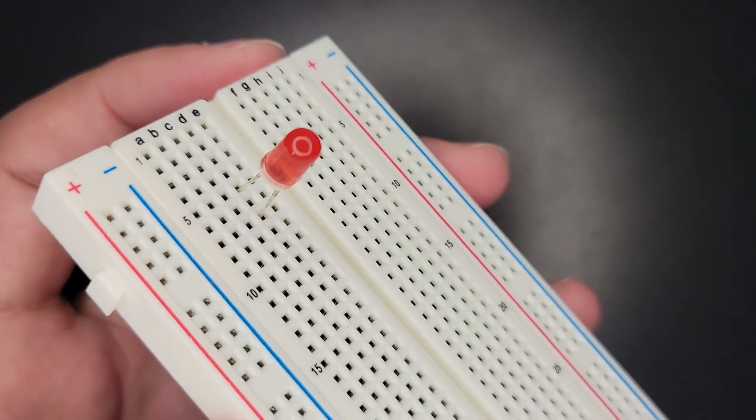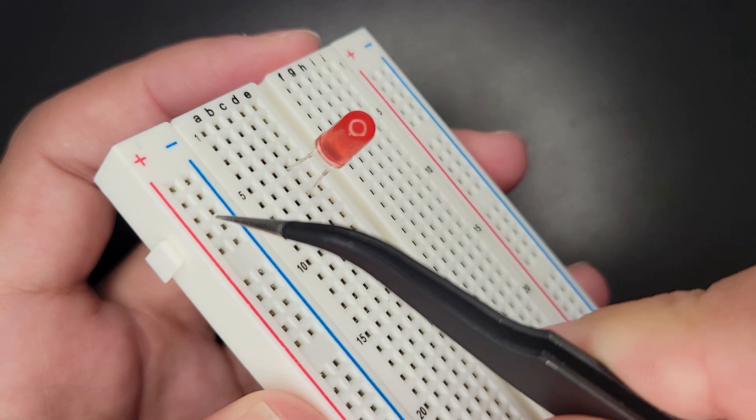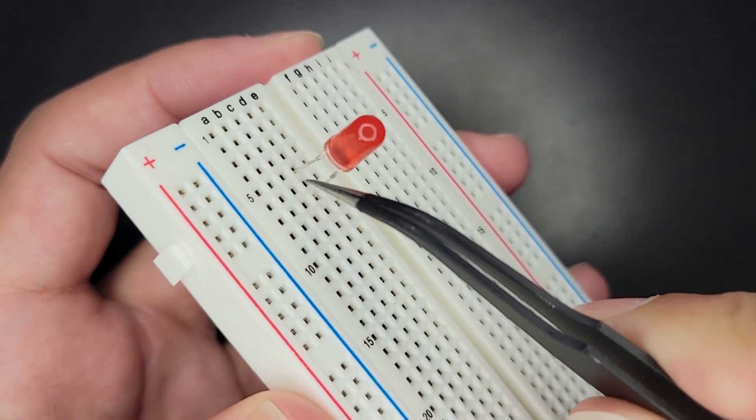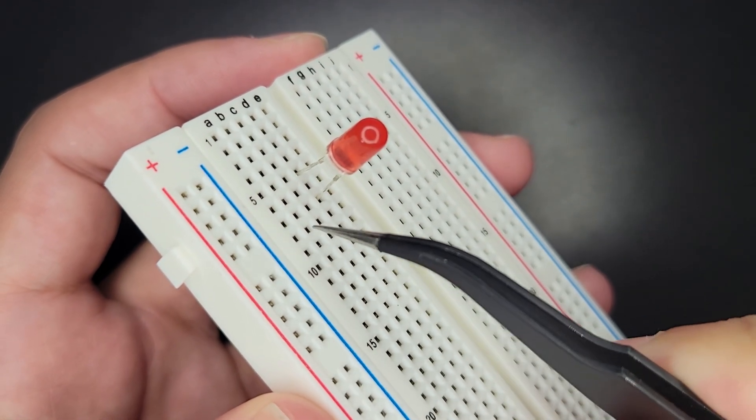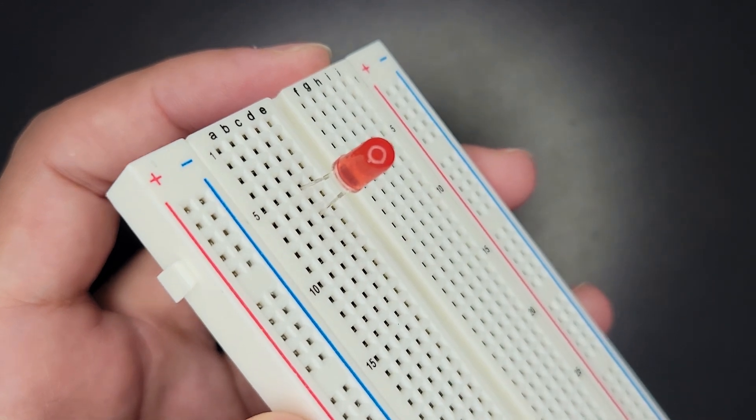So all we need to do now is make sure that we bring power from the power rail into row five and negative from the power rail into row seven and it should turn on.